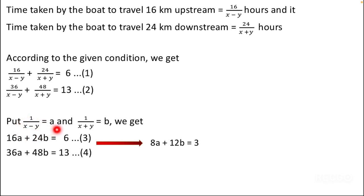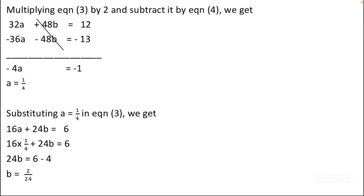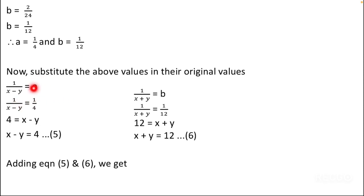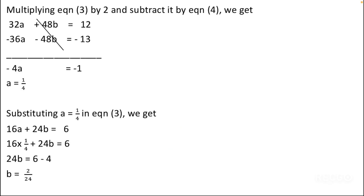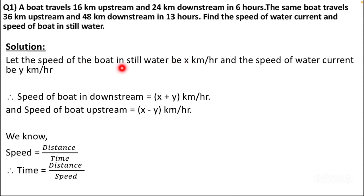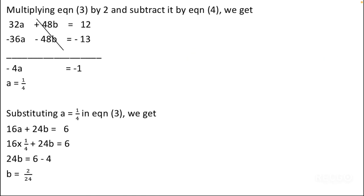Recall that a = 1/(x minus y) and b = 1/(x plus y). Substituting a = 1/4: 1/(x minus y) = 1/4, so by cross-multiplying, x minus y = 4 — this is equation 5. Substituting b = 1/12: 1/(x plus y) = 1/12, so x plus y = 12 — this is equation 6. Now we have two linear equations in x and y.